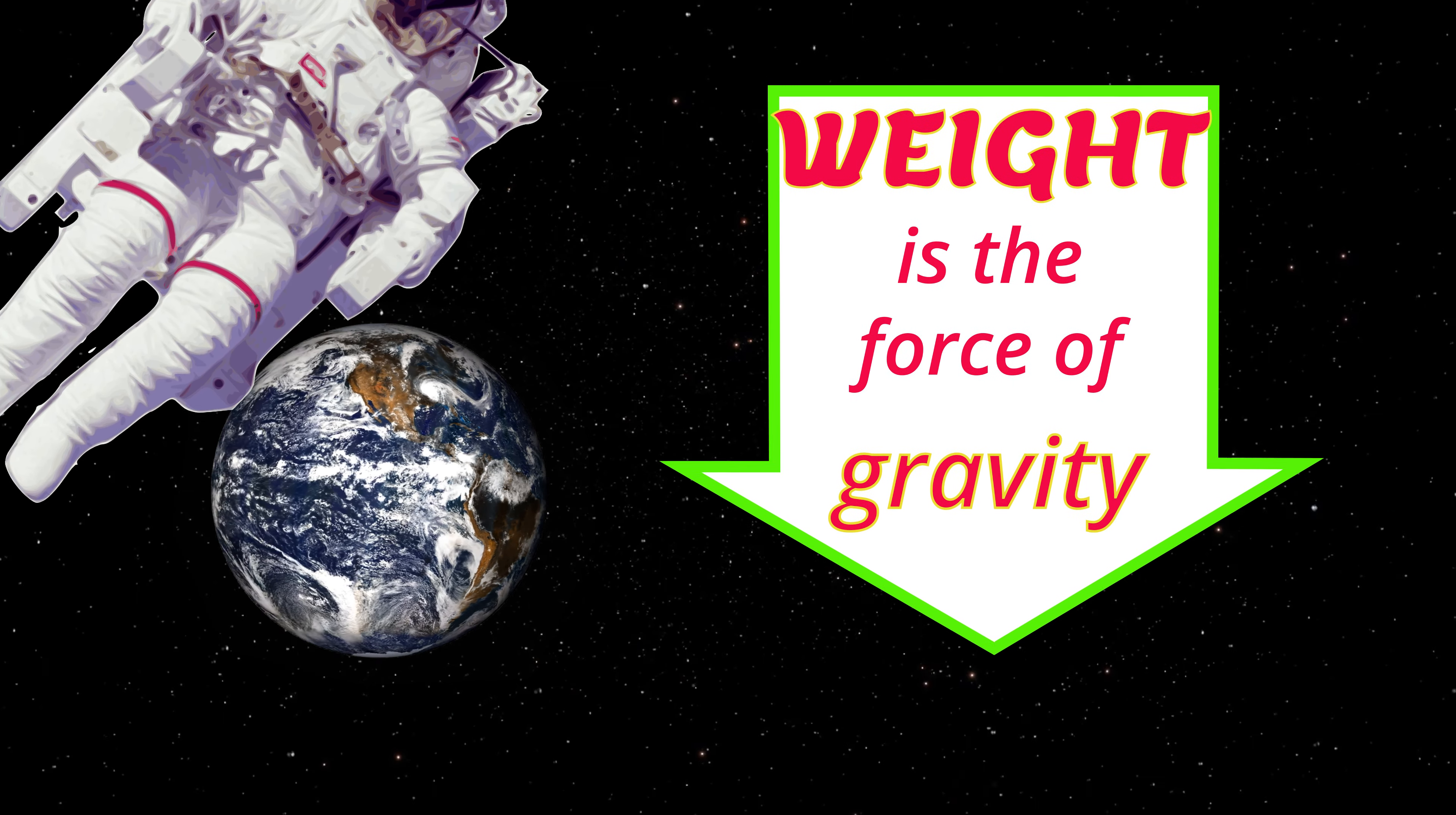There's a rule to calculate weight. Weight equals the mass multiplied by the gravitational acceleration of the planet or moon. First, let's understand the gravitational acceleration of our own planet Earth.